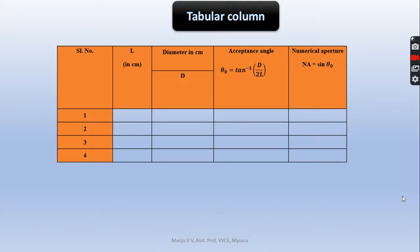Now the tabular column: this is the serial number, we have to take 4 readings. This is L in cm: 4, 6, 8, 10. Diameter of the circular fringe - whatever you get on your scale, measure that.